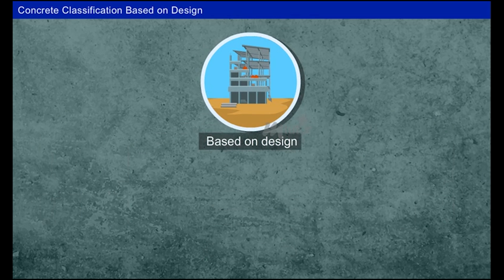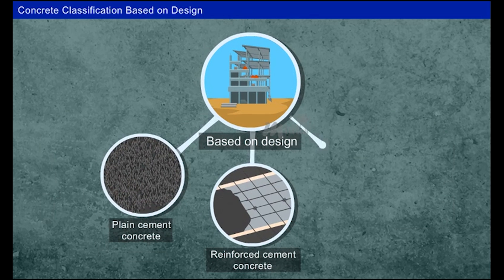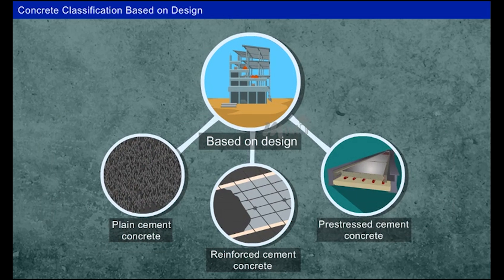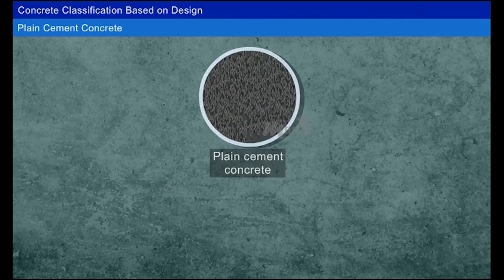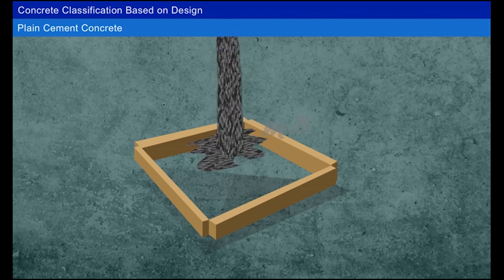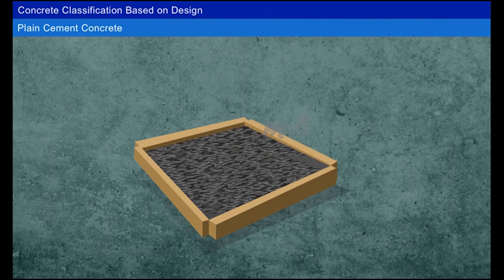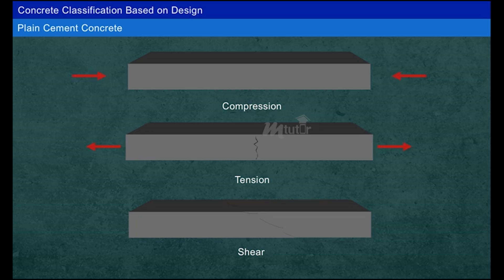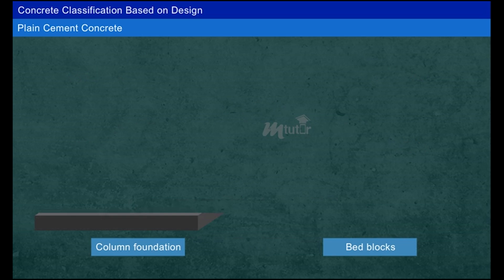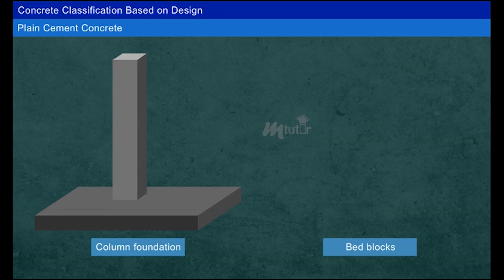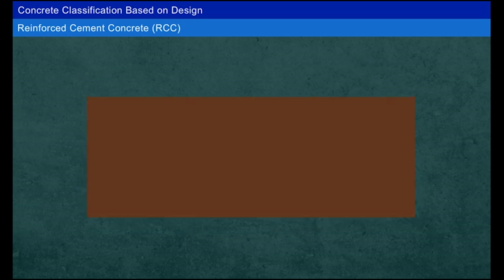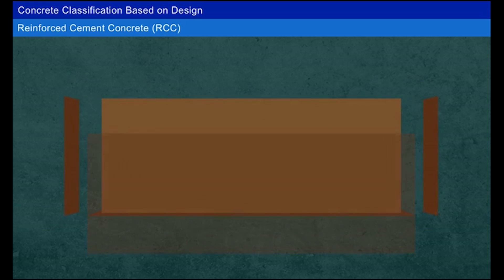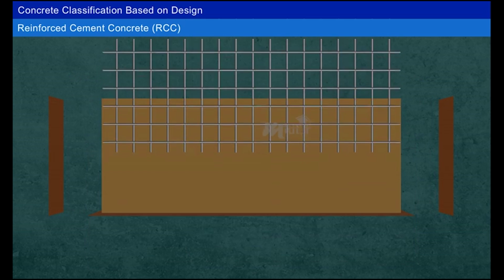Based on design, concrete is classified as plain cement concrete, reinforced cement concrete, and pre-stressed cement concrete. Plain cement concrete is cement concrete in which no reinforcement is provided. It is very strong in compression but weak in tension and shear. Plain cement concrete is used for column foundations and bed blocks.